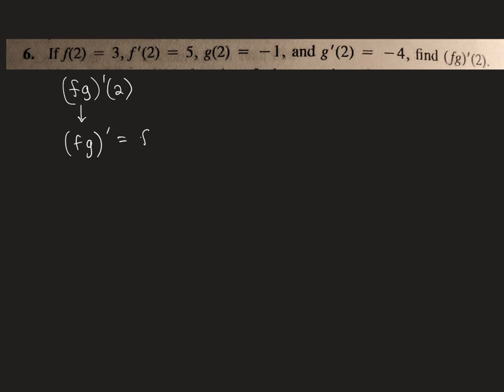So f times g prime would be, so remember product rule, the first times the derivative of the second, so f times g prime, plus the second times the derivative of the first, so g f prime.